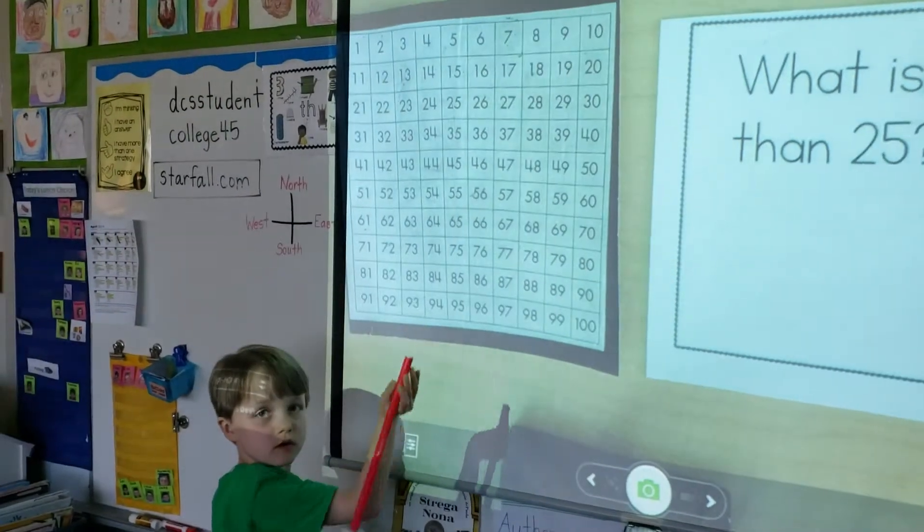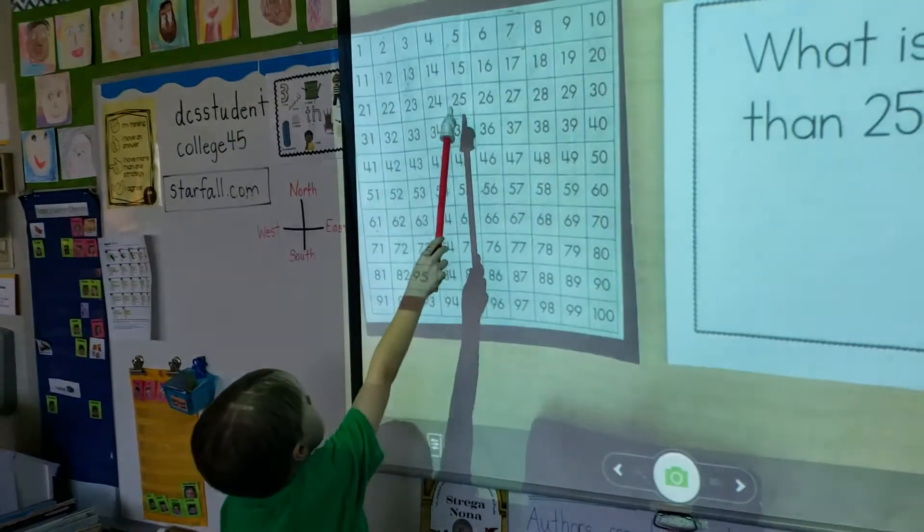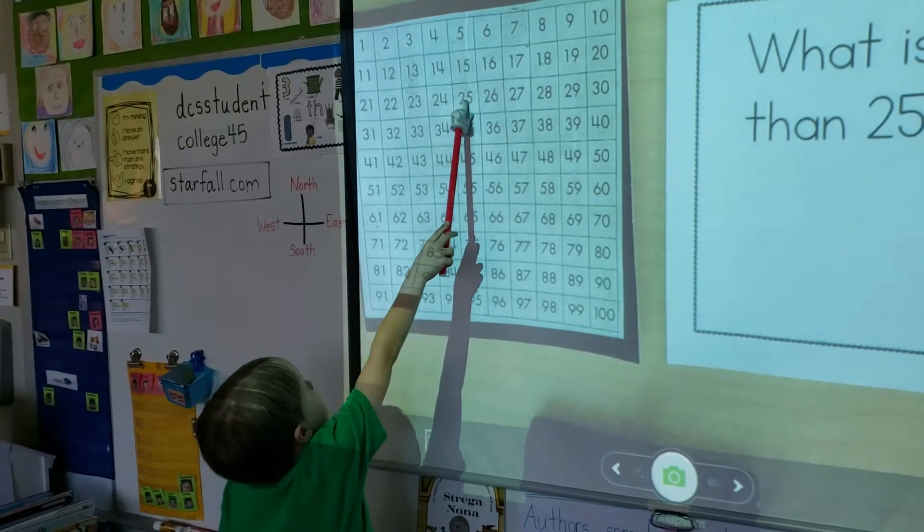Now for someone who maybe doesn't do a lot of math at home and doesn't know that, how could you explain to them that the answer is 46, that 21 more than 25 is 46?